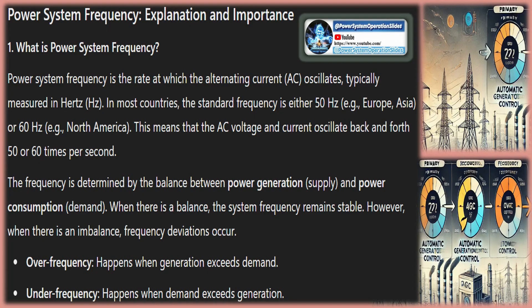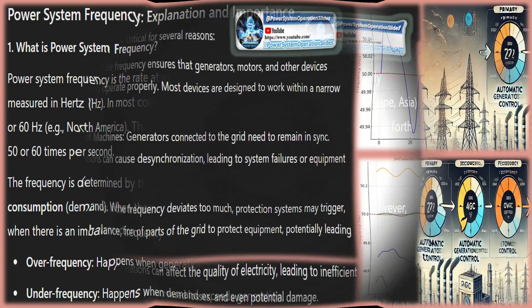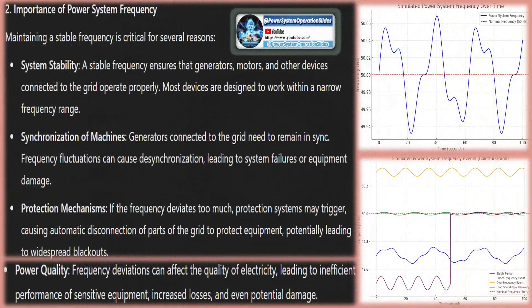Currently, 50 Hertz is the common frequency utilized in the majority of the world's electricity systems. Accordingly, there are either 50 cycles per second, 2,400 cycles per minute, or one cycle every 20 milliseconds.